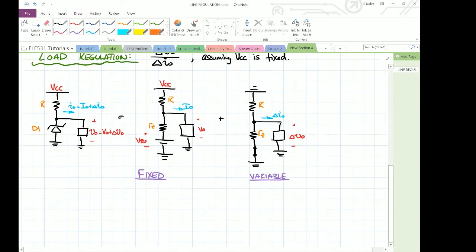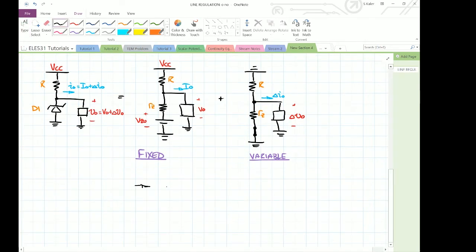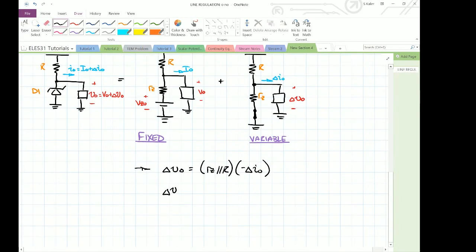And if I analyze that circuit on the right, it's a simple, very simple, about as simple as it gets, I think, when it comes to solving these kind of questions. You'll see that delta VO is going to be equal to RZ is in parallel with R, and it's going to be multiplied by minus delta IO because it's going in the opposite direction of the actual polarity of the voltage that I've defined there. And so delta VO over delta IO is going to be minus RZ in parallel with R, and that is by definition the load regulation of a Zener diode regulator.